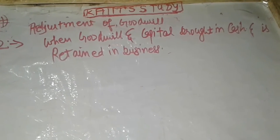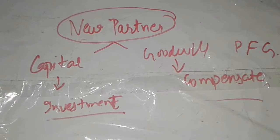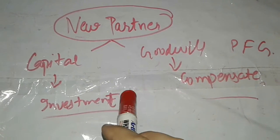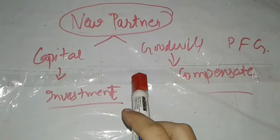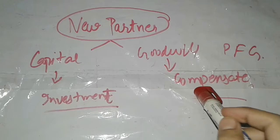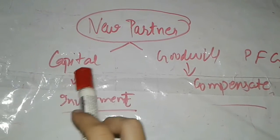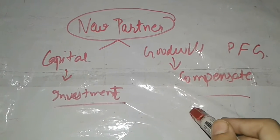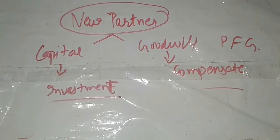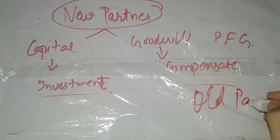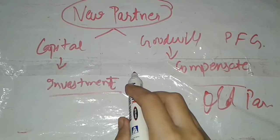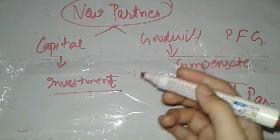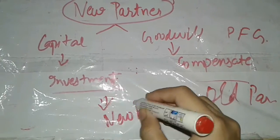Case two: when goodwill and capital are both brought in cash by the new partner and such amount is retained in the business. You need to know that a new partner brings two things: first, the amount of goodwill to compensate the old partners; and second, the amount of capital he wants to invest in the business. These two are different — goodwill compensates old partners, while capital is the new partner's own investment.